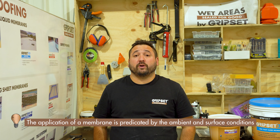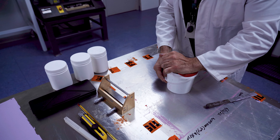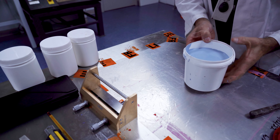The application of the membrane is predicated by the ambient and surface conditions. This can be found in the product TDS and generally will give you a range between 5 and 35 degrees Celsius as the recommended temperature to apply a liquid applied membrane. It also specifies the drying and curing times, and this is determined by standardized conditions through extensive lab testing. Generally when the product is tested, it will be over a dry substrate in a controlled environment of 23 degrees and 50% relative humidity.